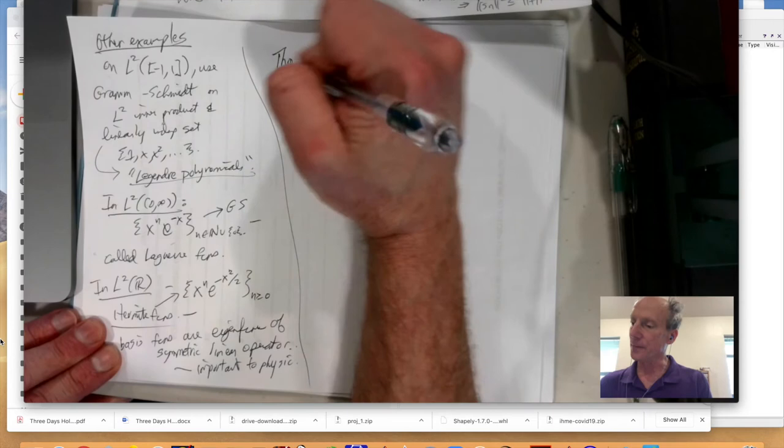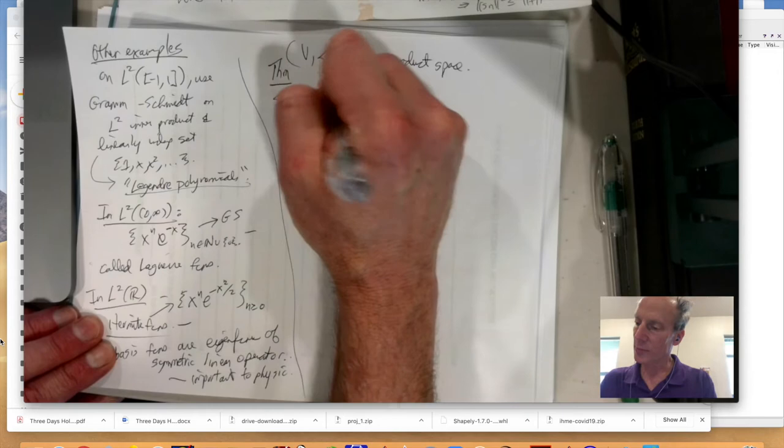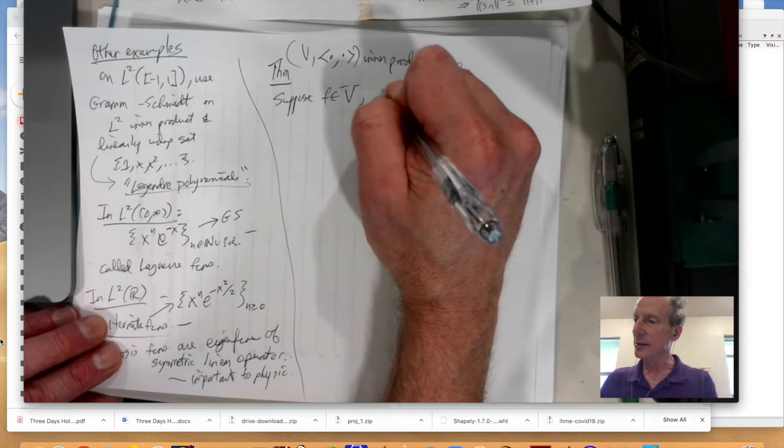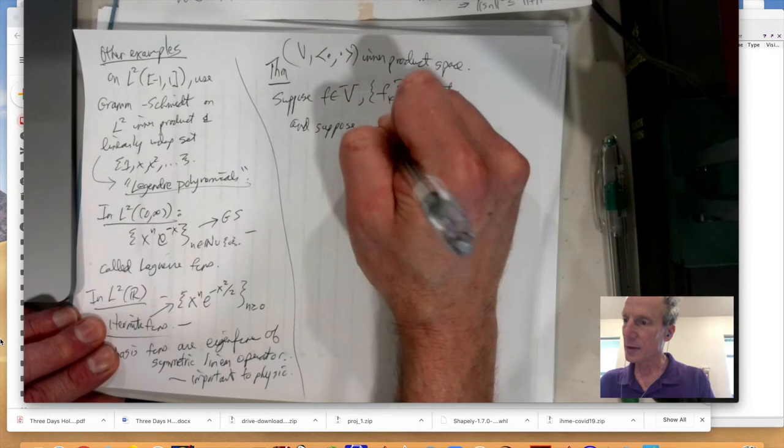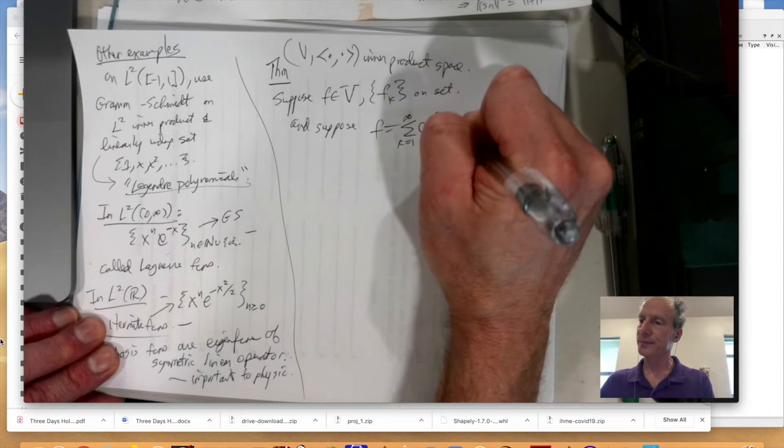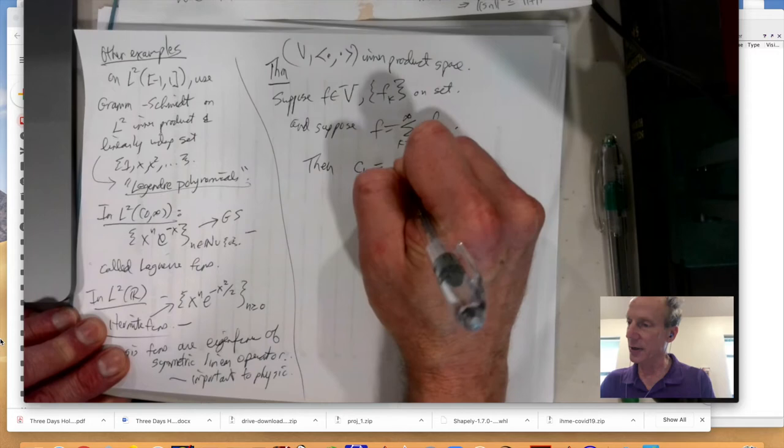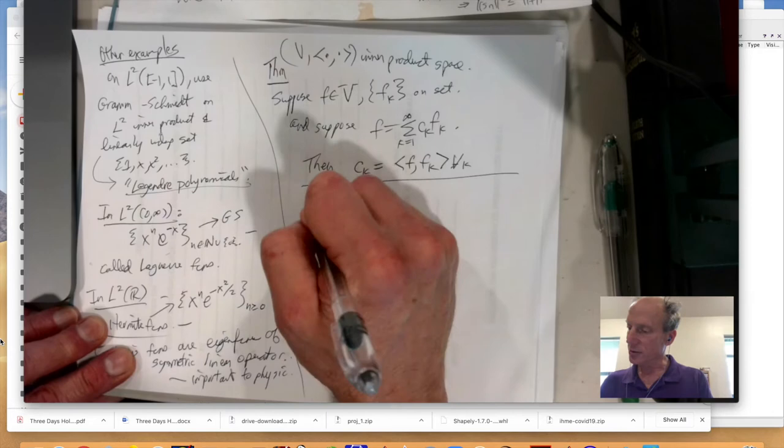Vector space with inner-product. Suppose F, we always think of it as a function, because most of our infinite dimensional vector spaces are function spaces. So, suppose F is in there, and then, and FK is an orthonormal set. And suppose F actually equals summation K equal 1 to infinity of CK times FK. And then, the theorem is, then you can actually calculate these constants by taking the inner product of F with FK.